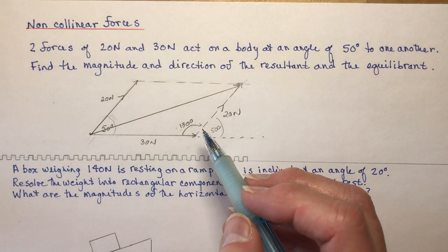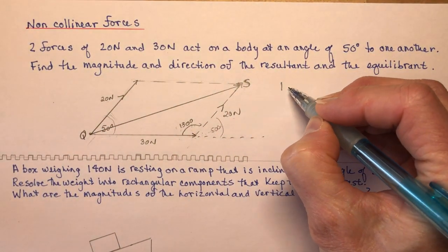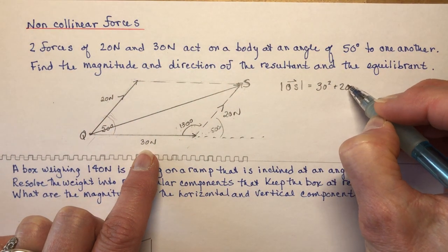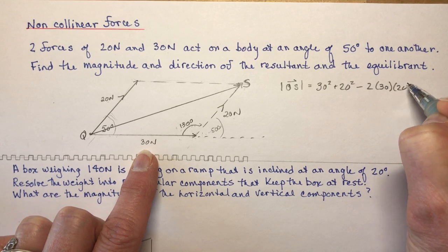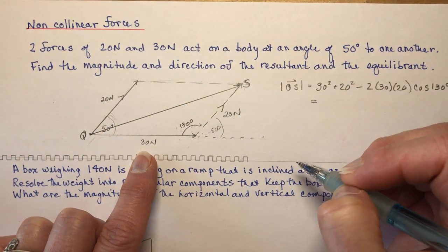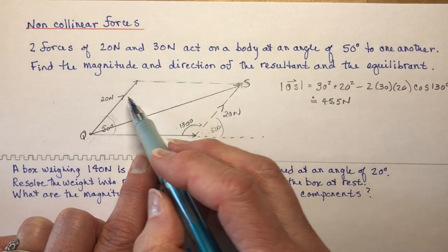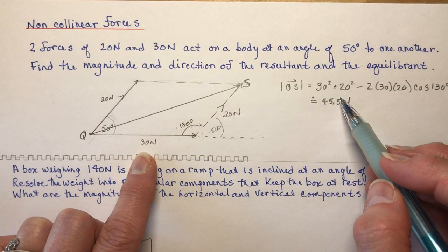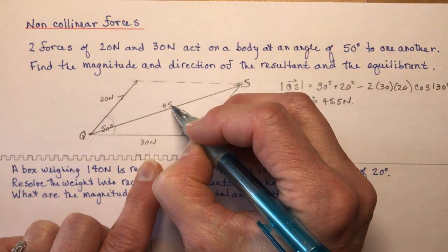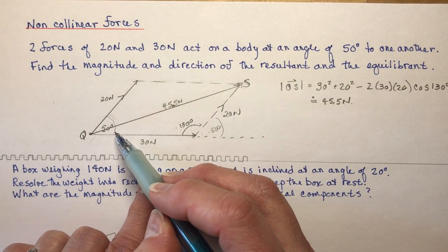To find the magnitude of the resultant QS, use the cosine law: QS² = 30² + 20² − 2(30)(20)cos(130°). Working that out gives approximately 45.5 newtons. Now I need the direction — I'll use the sine law to find the small angle θ between the resultant and the 30 N force.